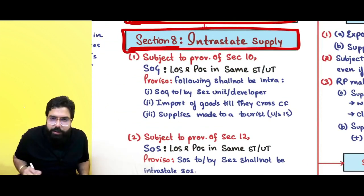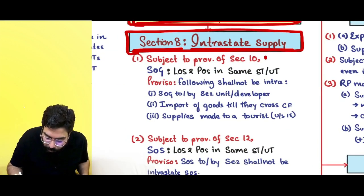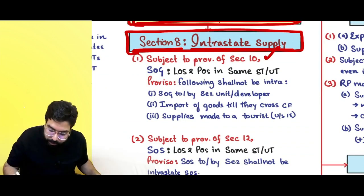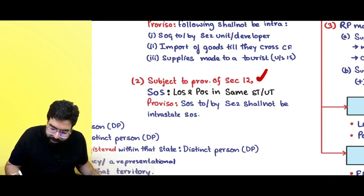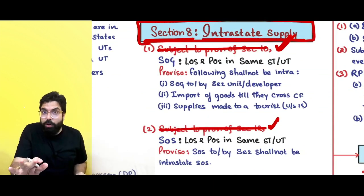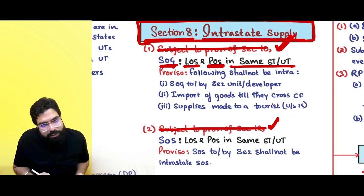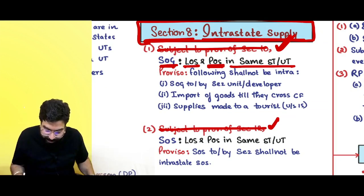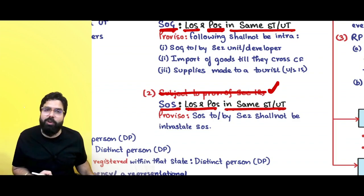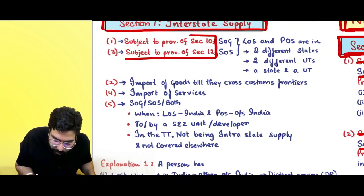Reading section 7 and 8 of the IGST Act: intrastate supply, subject to provisions of section 10 (place of supply chapter). Supply of goods where location of supplier and place of supply are in the same state or same UT is always intrastate supply. Supply of services where location of supplier and place of supply are in the same state or UT is also always intrastate supply.